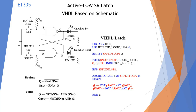Here I have another schematic of an SR latch, except this one is an active low based on NAND gates. I'm showing key inputs instead of button inputs because I need these to be high and low, and I want to use switches instead of buttons that will only go low when pressed. If we take this and convert it to boolean, then convert it to VHDL, we can write the program.